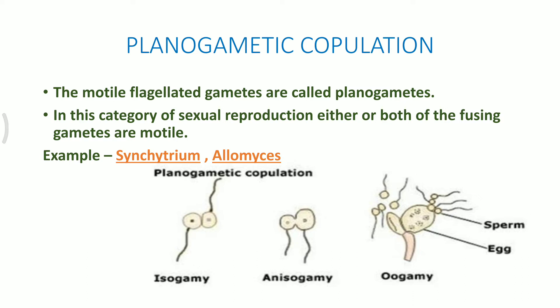In anisogamy, one of the gametes is of larger size which is the female gamete, whereas the male gamete is smaller in size. It is known as anisogamy because there is a structural difference between both the gametes.